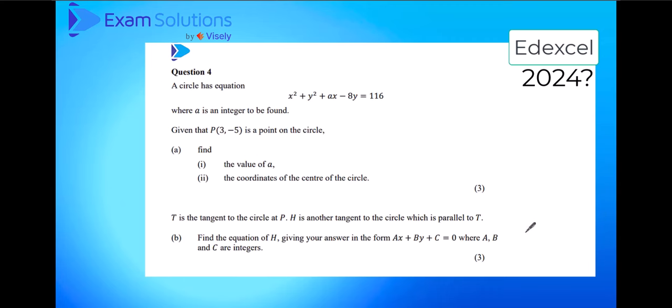And so where do we get part B? Part B: T is the tangent to the circle at P. H is another tangent to the circle which is parallel to T. Find an equation of H giving your answer in the form AX plus BY plus C equals zero, where A, B and C are integers.